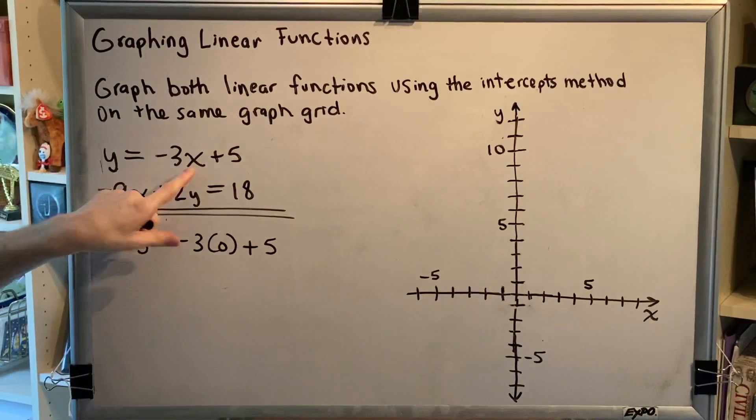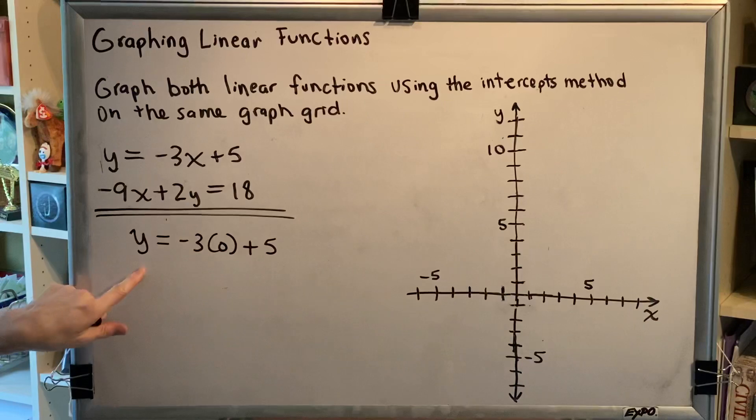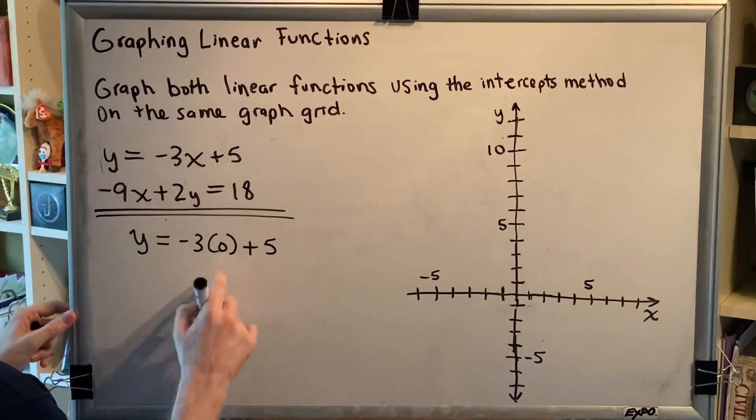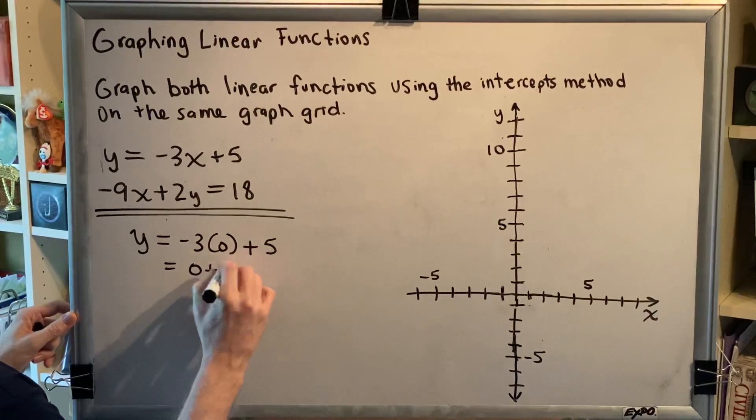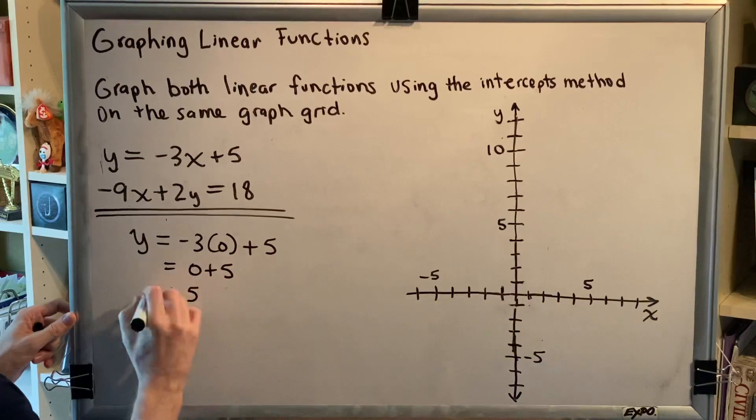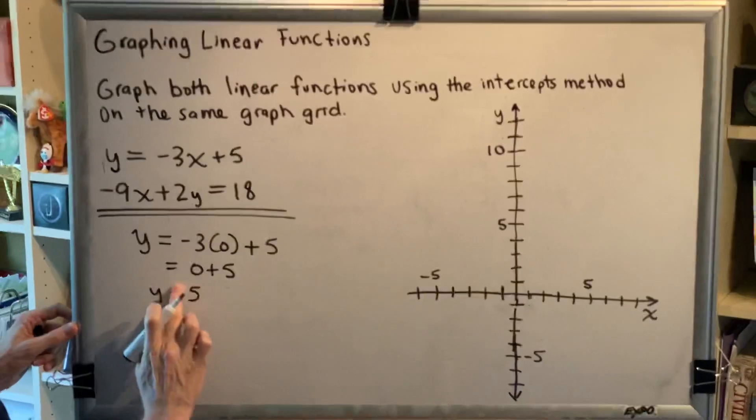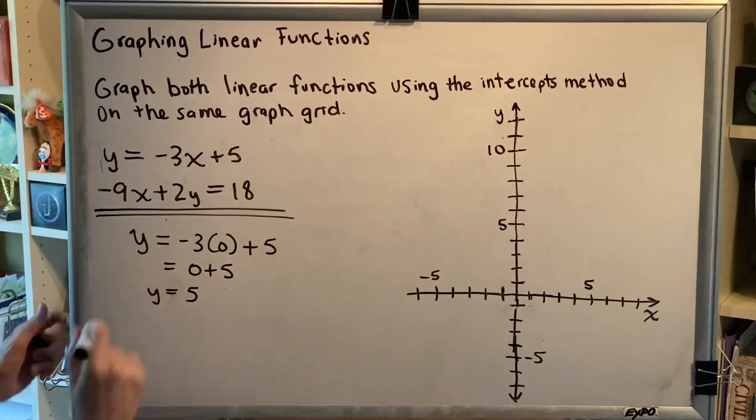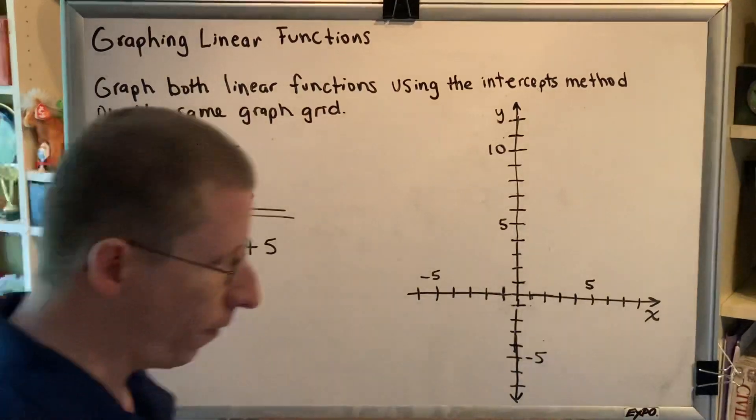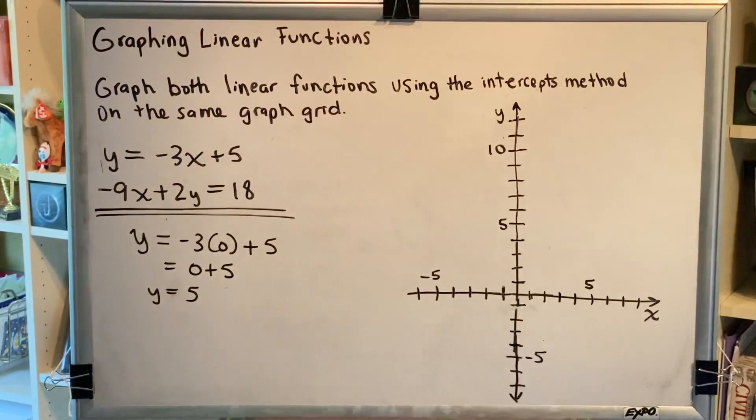In this top equation, I'm going to replace the x with zero and then solve for y. Negative three times zero is zero, so I get zero plus five, which is five. So y equals five. I can plot on my graph grid y equals five.